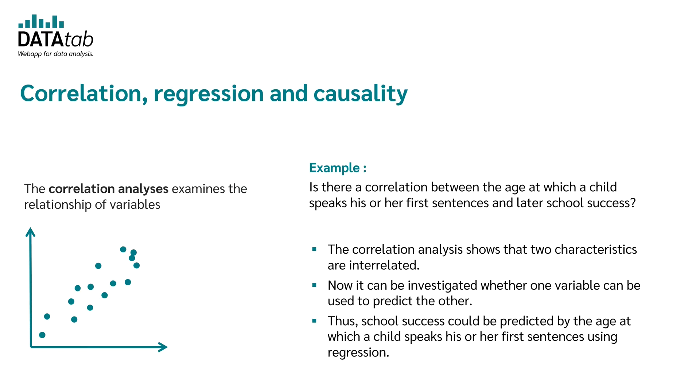If there is a correlation between the age at which a child speaks his or her first sentences and later school success, we can even speak of a causal relationship in this case. For example, that the age at which a child speaks his first sentences influences later school success. In this case, it is very easy because we have a temporal separation. It is clear that later school success cannot influence the age at which a child speaks his or her first sentences.